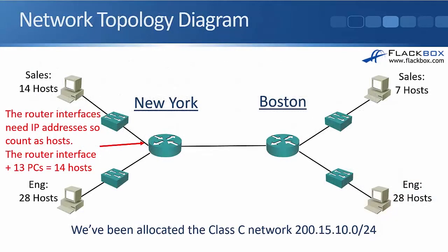For our example, this is our network topology diagram. We've got an organization with an office in New York and a branch office in Boston. New York is their headquarters and they've got 28 hosts in the engineering department and 14 hosts in sales. In Boston they've also got engineering and sales — 28 hosts in engineering the same as New York, and only seven hosts in the sales department. We've been allocated the Class C network 200.15.10.0/24 from our internet service provider.